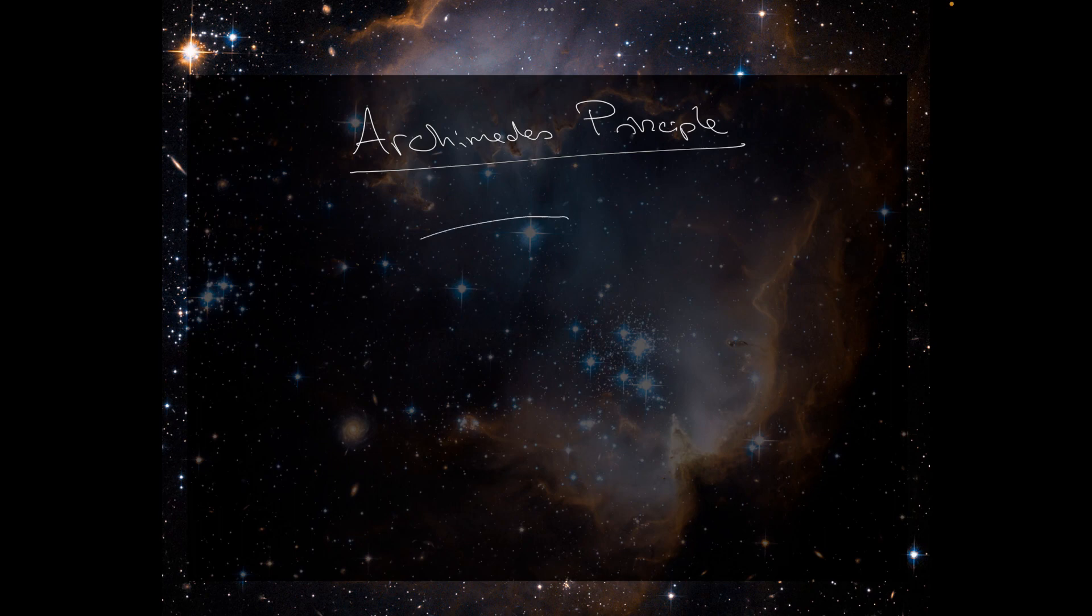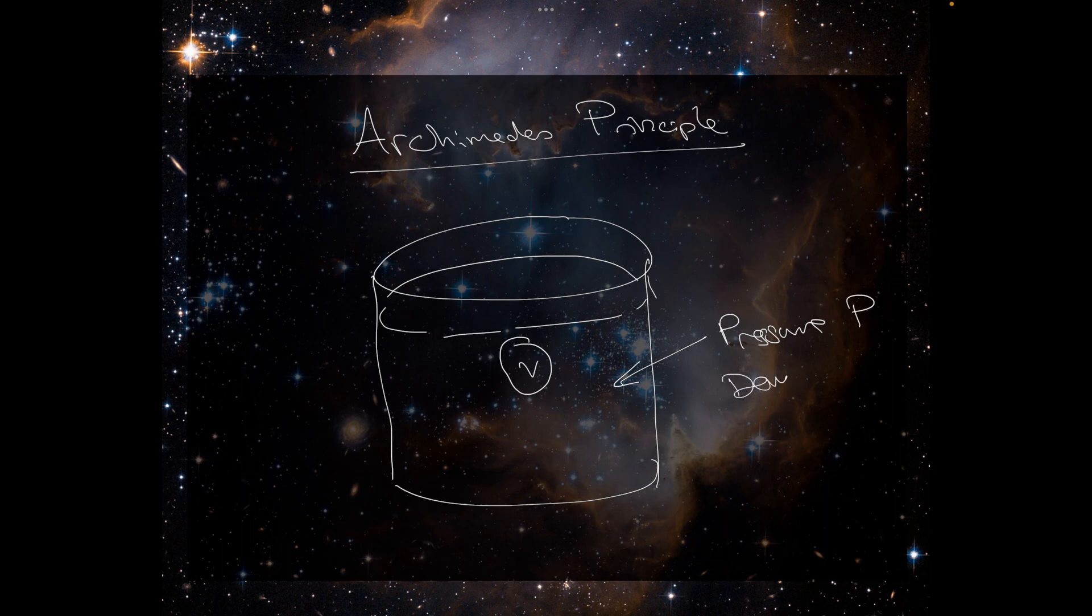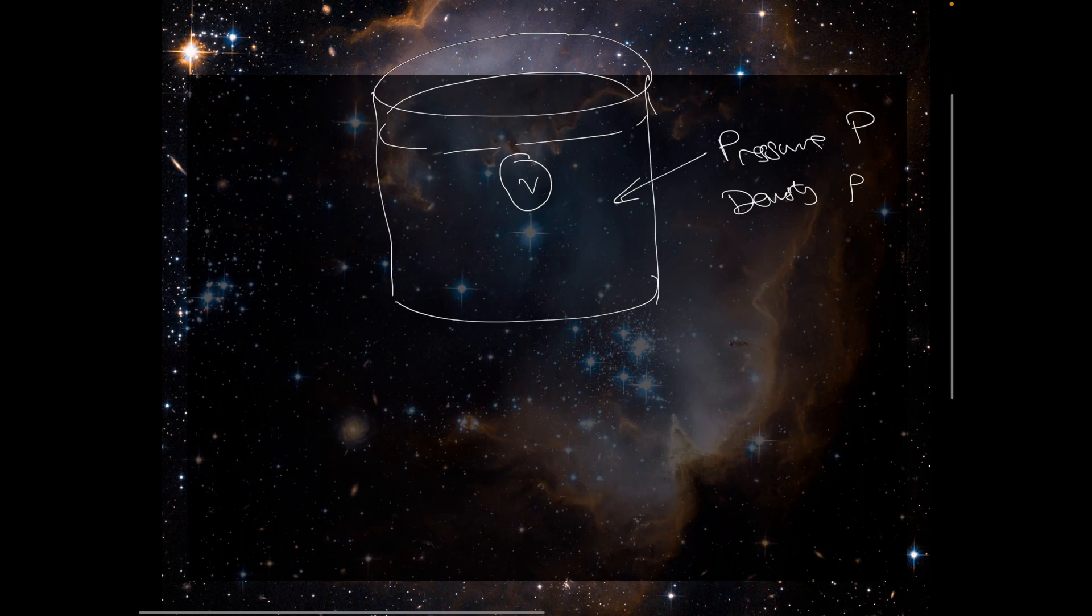So we're considering a column of water or some other fluid with perhaps some sort of object occupying a volume V within the liquid. Let the pressure be P and the density rho, each of which can vary with position.